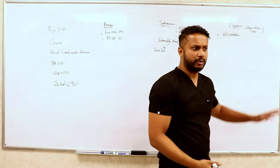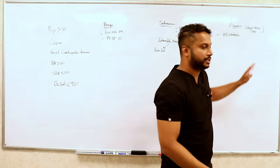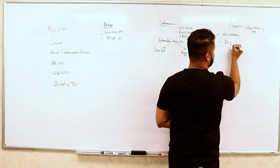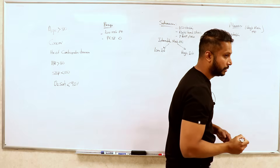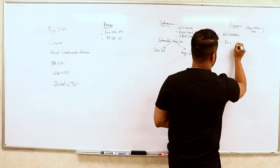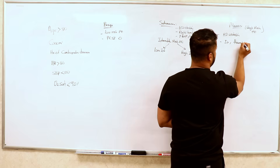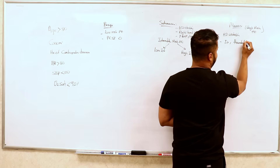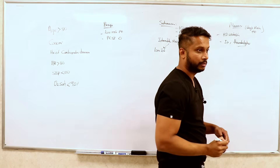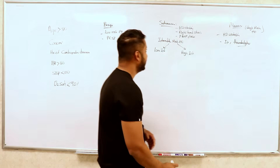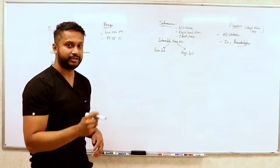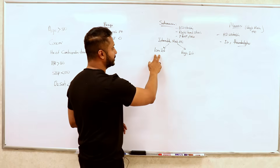If a patient has a massive PE, your PESI score doesn't matter as much. What matters is you will admit the patient to inpatient and the patient is going to get thrombolytics. That's how you're going to treat it. When it comes to sub-massive — now called intermediate risk PE — you have low intermediate versus high intermediate.